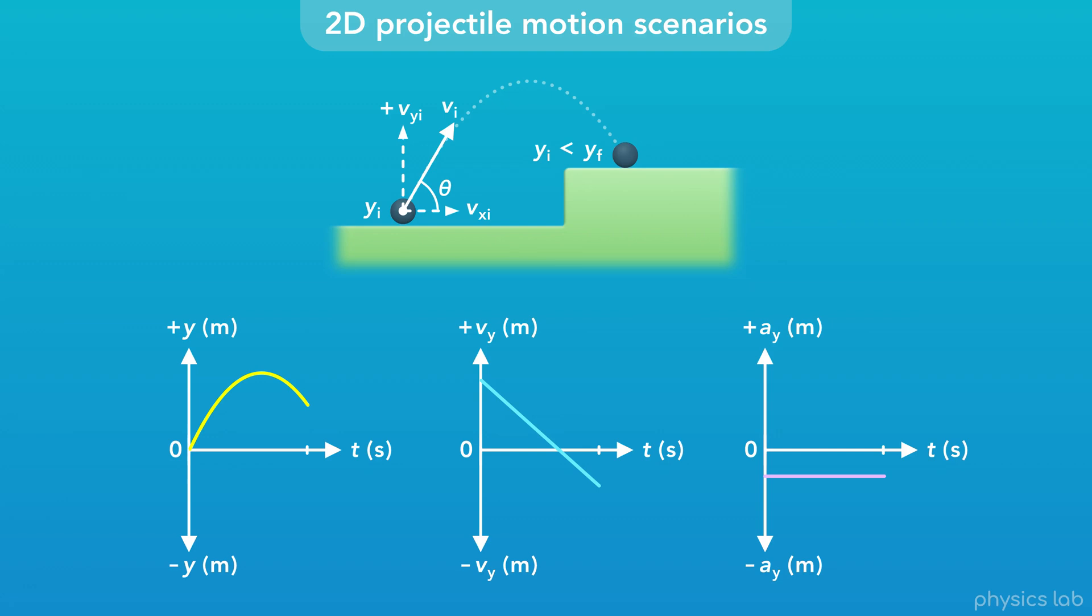If the final height is greater than the initial height, the y motion looks like this. They're basically the same, but they stop earlier. The trajectory is not symmetric, so the time when it reaches the maximum height and 0 velocity is not in the middle, it's later.